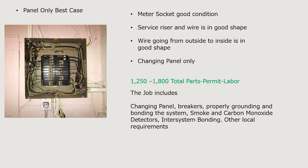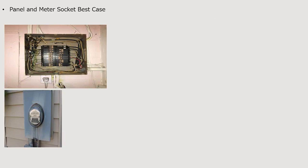This job includes changing the panel, installing new breakers, properly grounding and bonding the system, installing smoke and carbon monoxide detectors where required by code, installing an inter-system bonding strip, and other local or NEC requirements. This is a pretty standard best-case scenario price. There are things that could push it higher. If you get a price around $800 to $900 including parts, be very careful — if it sounds too good to be true, it usually is.